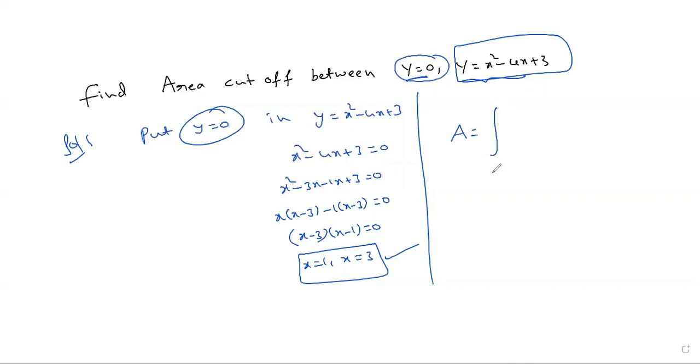Now you can write A equals integral a to b, y dx, where y is a function of x. Clear? Then the point y and dx. y can be written as y equals function of x. a to b are the x boundaries. Substitute the integral from 1 to 3, x squared minus 4x plus 3 dx.